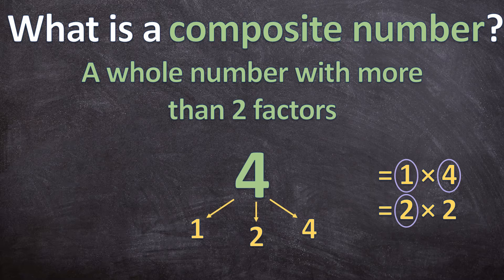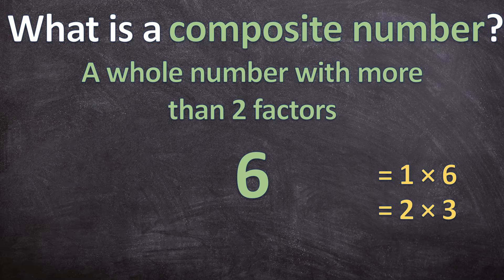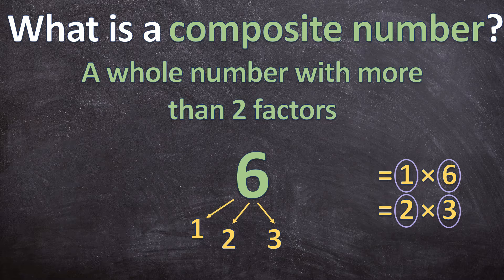Let's look at another example. What whole numbers can we multiply together to get 6 as an answer? 1 times 6 gives us 6, but also 2 times 3 equals 6. So 6 has 4 factors: 1, 2, 3, and itself 6. So 6 is also a composite number because it has more than 2 factors.